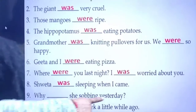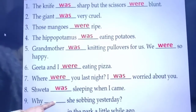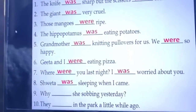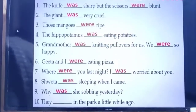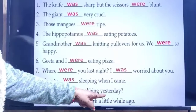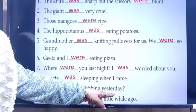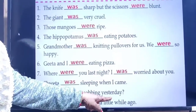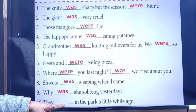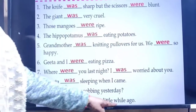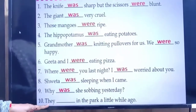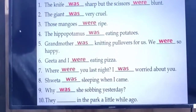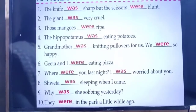Next: 'Why ___ she sobbing yesterday?' She is a singular pronoun, and yesterday confirms past form, so: why was she sobbing yesterday? Next: 'They ___ in the park a little while ago.' They is a plural pronoun, and a little while ago means just a few minutes back — past form — so: they were in the park a little while ago.